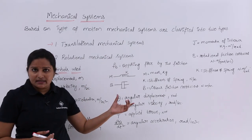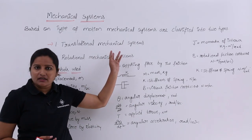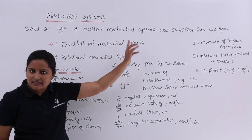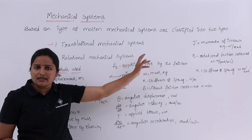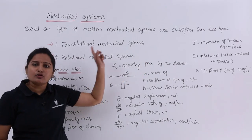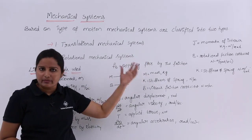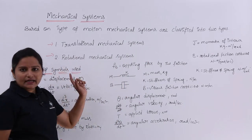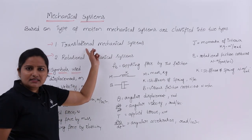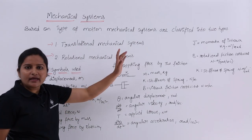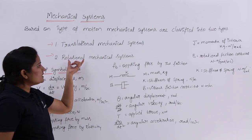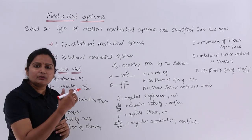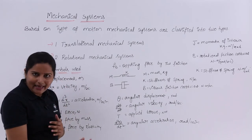We will discuss each clearly one by one. In the next two videos, we will discuss translational mechanical systems and rotational mechanical systems one by one. The basic idea is translational systems move along a line, while rotational mechanical systems move along an axis.